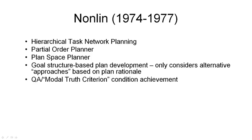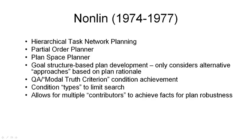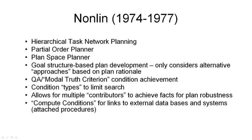Nonlin has a mechanism for answering the question of whether a proposition has a certain truth value at a certain point in the plan — we call that the QA module, or question answering module, more often nowadays called the modal truth criterion. It used condition types to limit search, and allowed for multiple contributors to condition achievement in order to achieve plan robustness. It included compute conditions for links to external databases and systems, because it was built as a practical planning system — these are similar to attach procedures in some other planners.